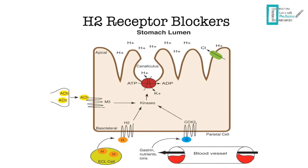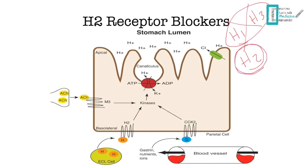The third class is H2 receptor blockers. The H2 receptor is found in the gastric mucosa. When histamine binds to it, it activates a protein kinase cascade, which pumps protons into the lumen to react with Cl⁻, forming HCl. Blocking this receptor prevents HCl formation.